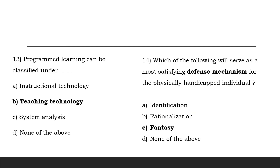Programmed learning can be classified under dash. Option A is instructional technology; option B is teaching technology; option C is system analysis; option D is none of the above. The answer is teaching technology — programmed learning is classified under teaching technology.